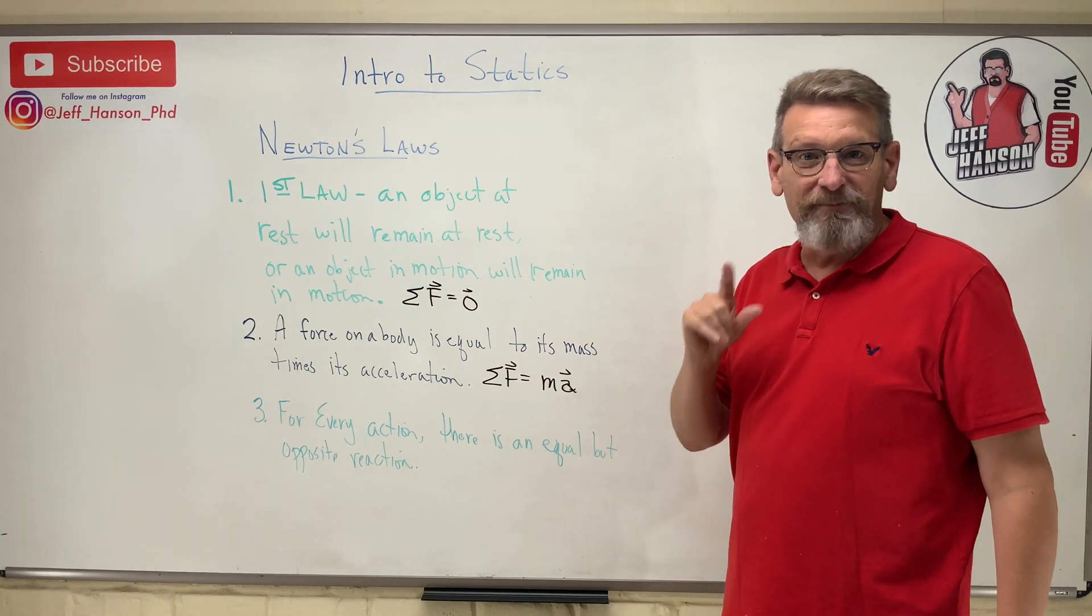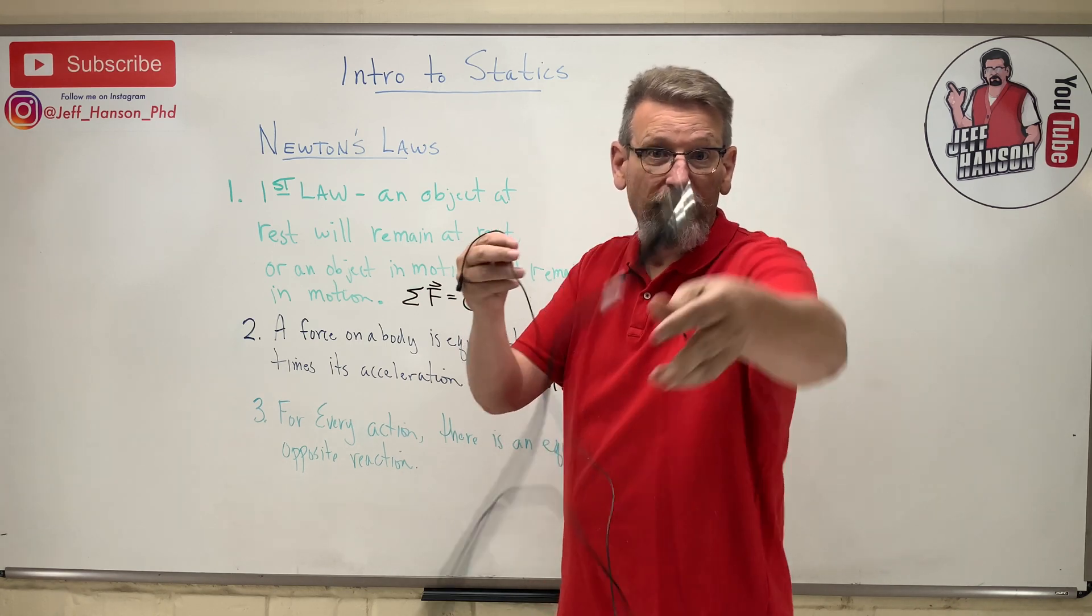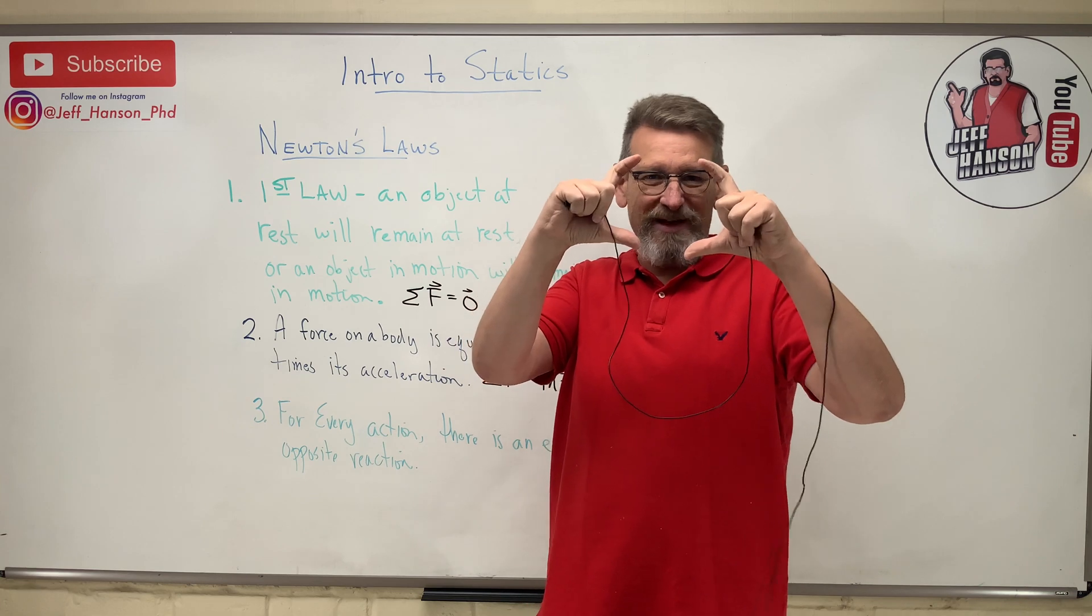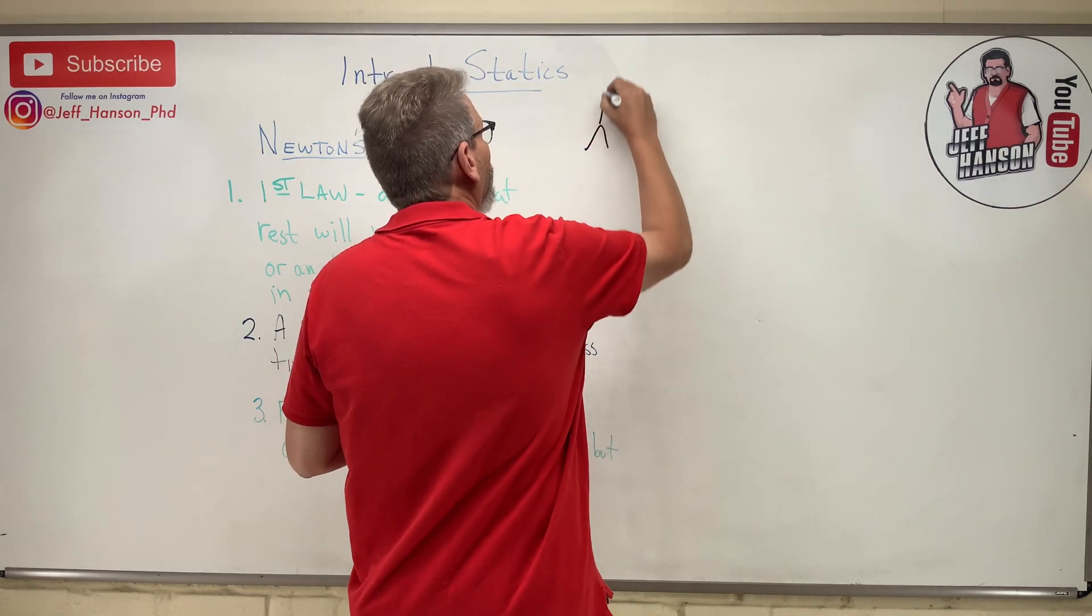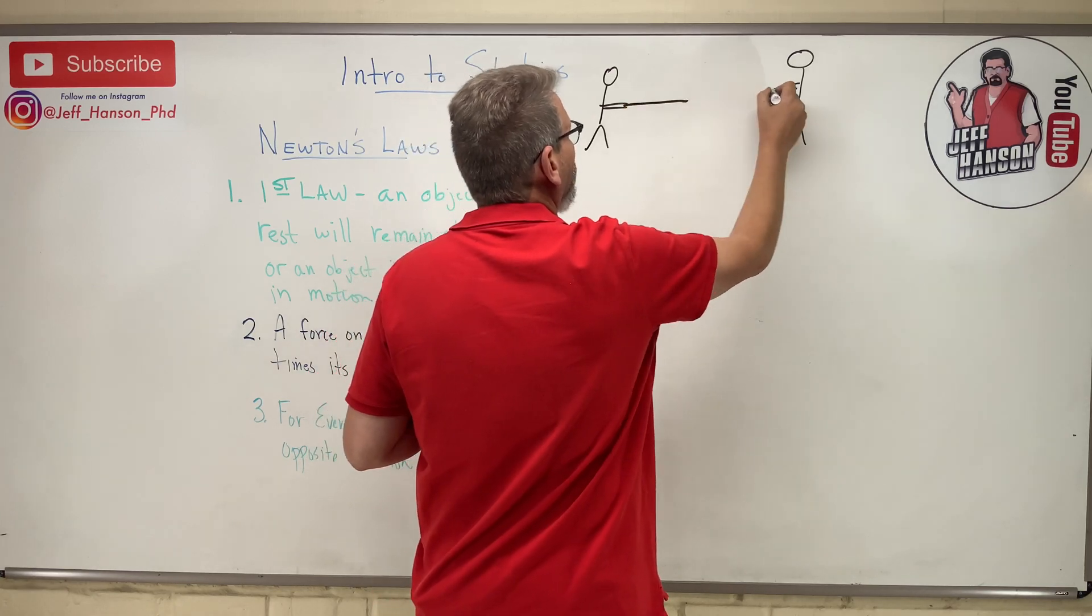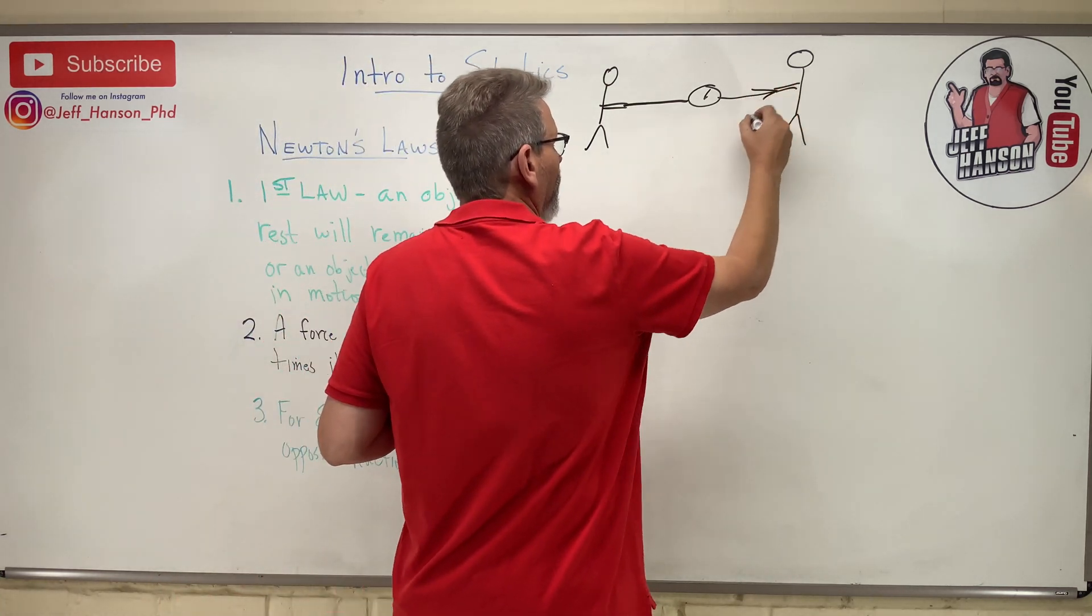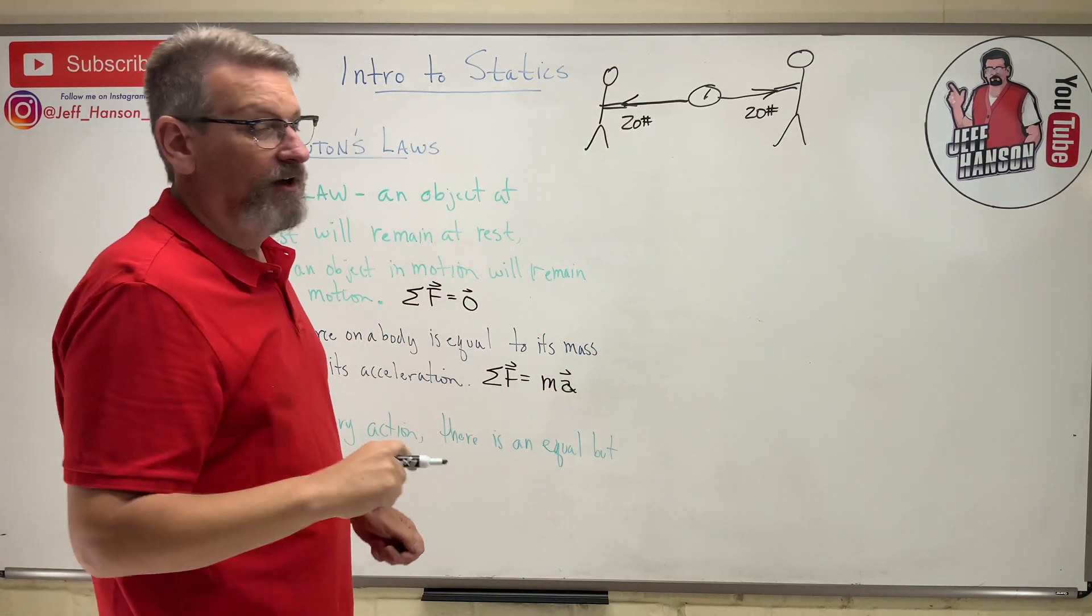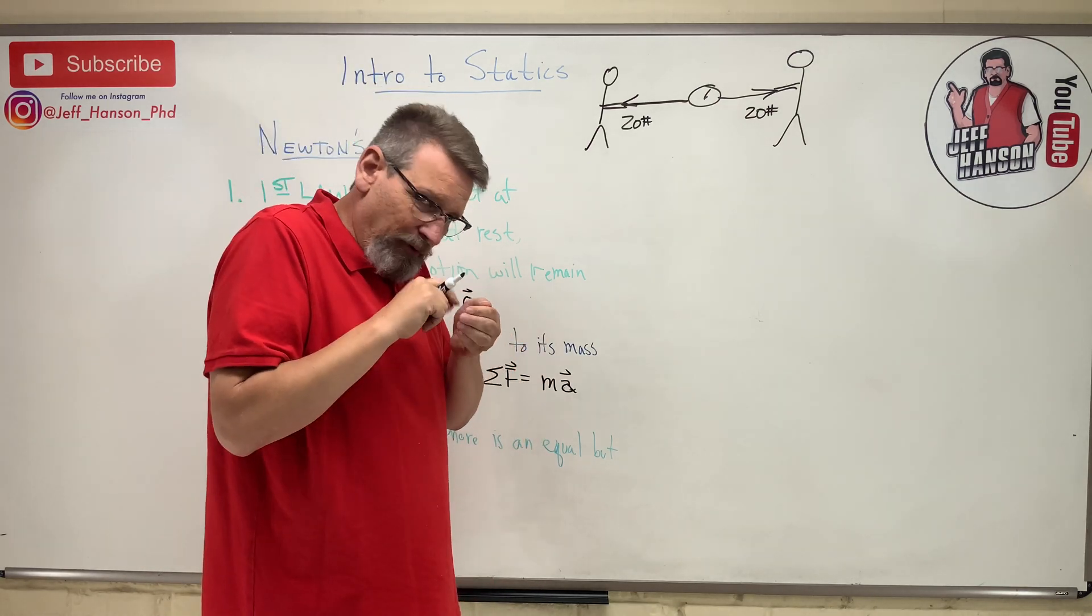The last one: for every action, there is an equal and opposite reaction. So I've got a rope. I'm going to throw you one end of the rope. In the middle of that rope, there is a scale. I'll draw you a picture. So there's a little guy over here and a little guy over here. That's you. And there's a rope here and a rope here. In the middle there's a scale. It would read the force there. So you're going to pull this way, 20 pounds. And I'm going to pull this way, 20 pounds. And the question is, what will the scale read?